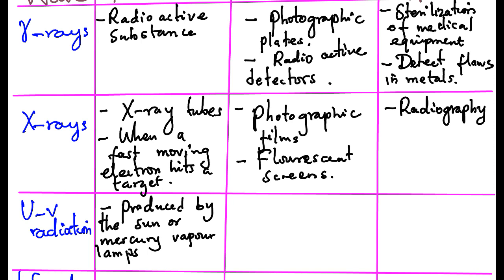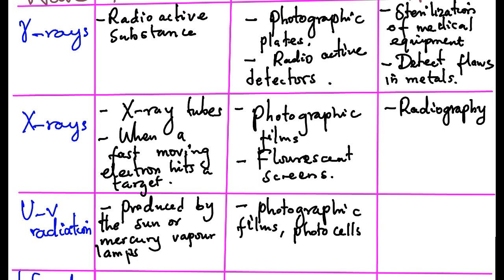Ultraviolet radiations can be detected via photographic films, photocells, fluorescent materials, or even the eye. Another detector is paper that has been lightly smeared with Vaseline.